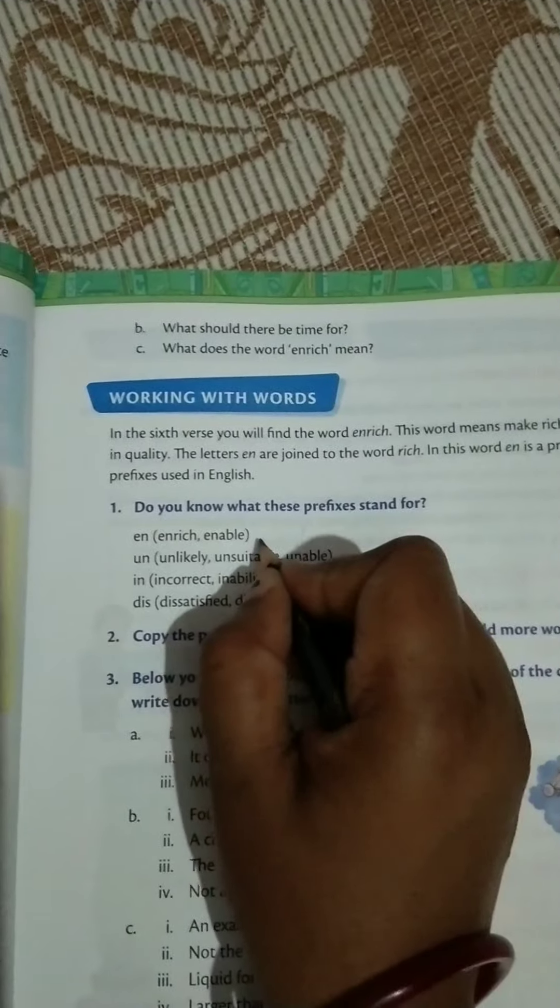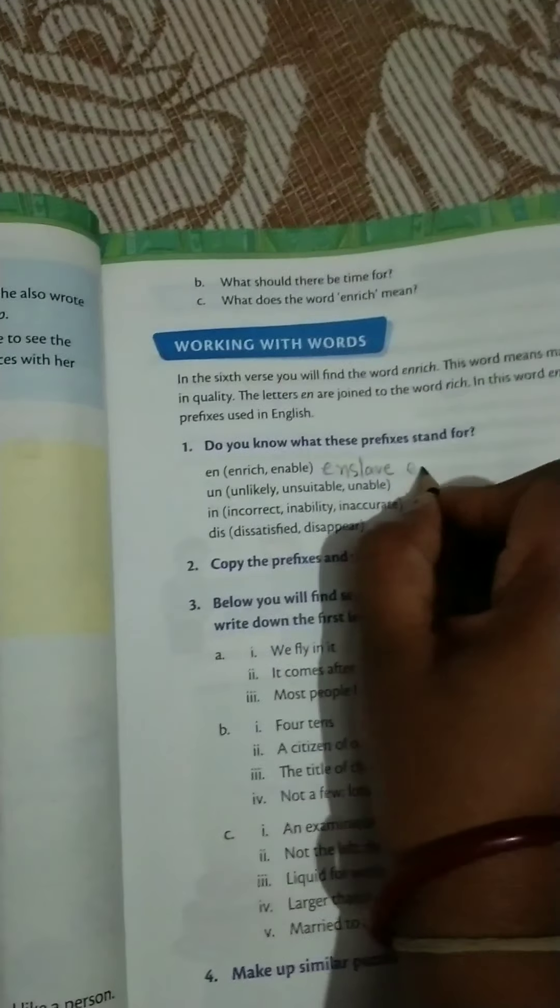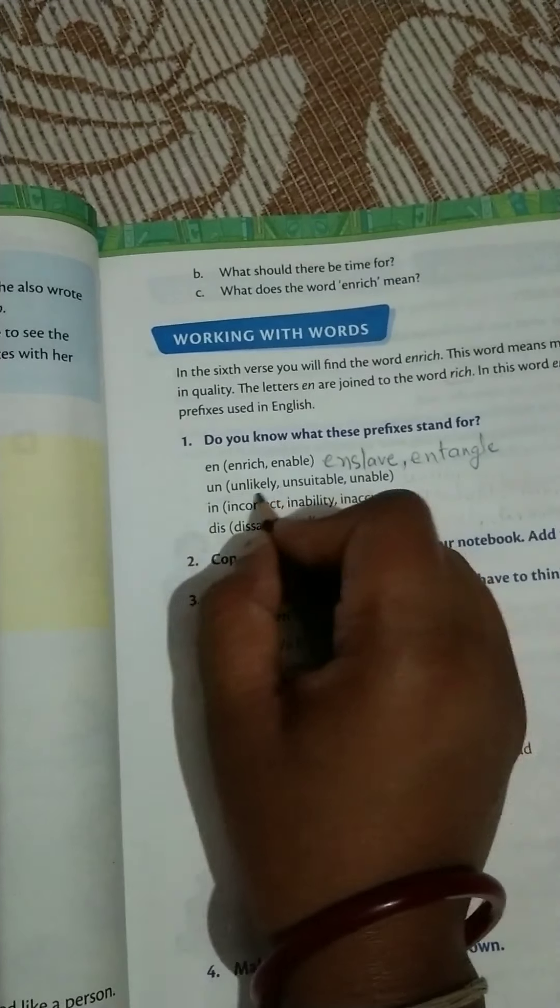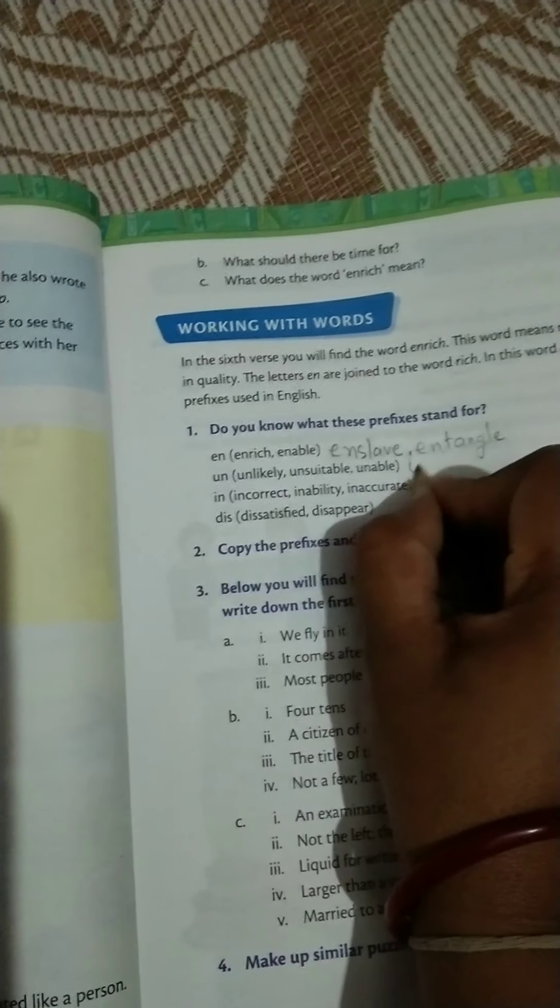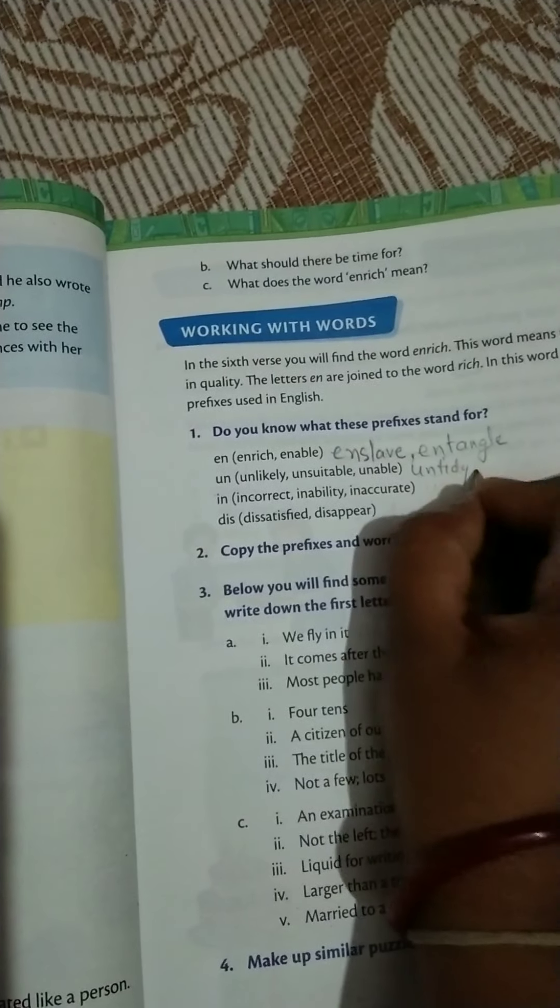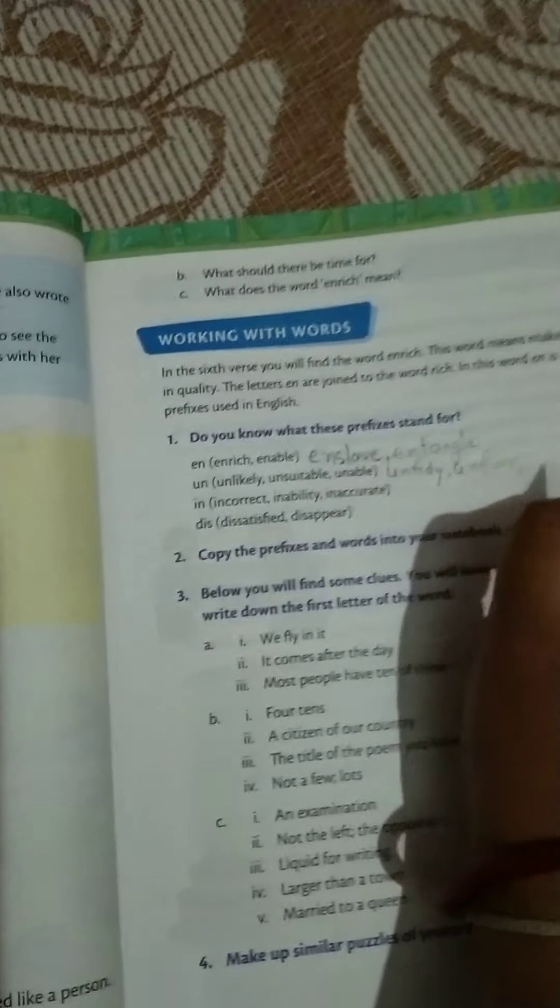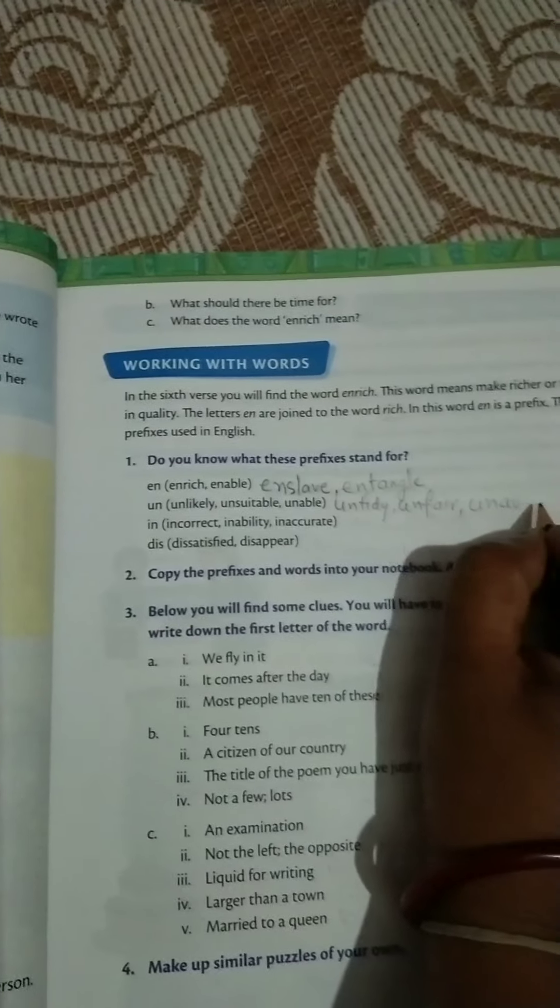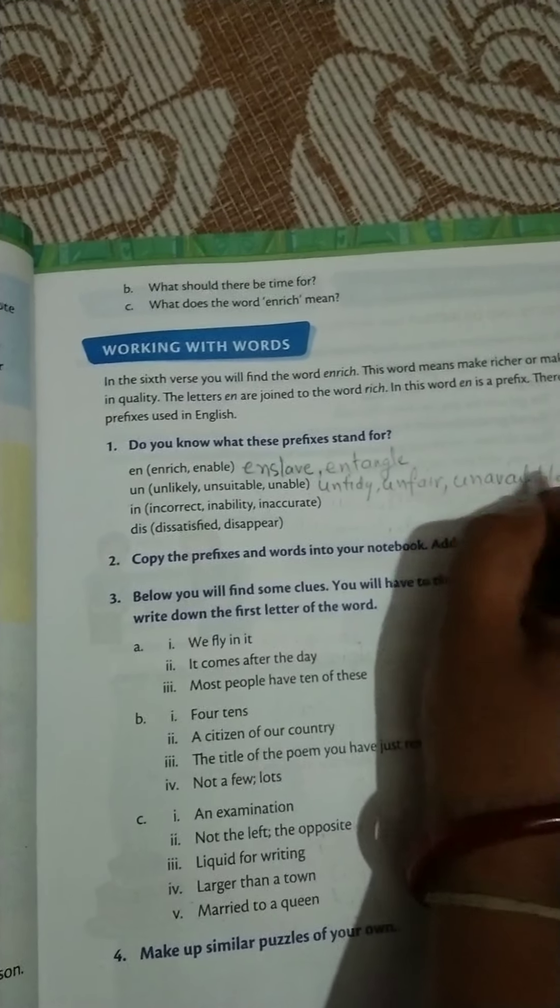It is enslave and next is entangle. Next, unlikely, unsuitable, unable. Like these, other words are untidy, unfair, unavailable.